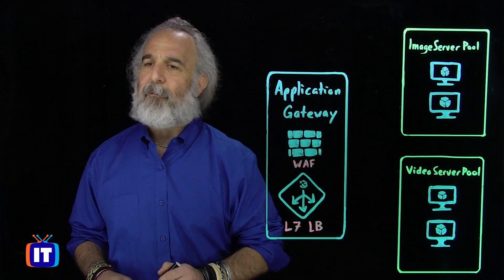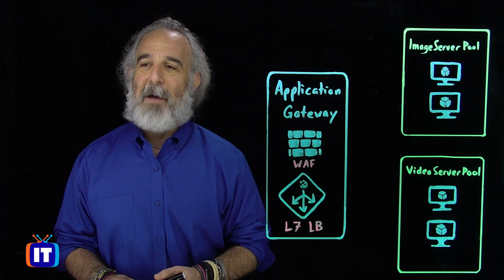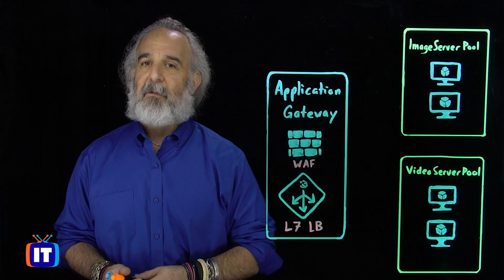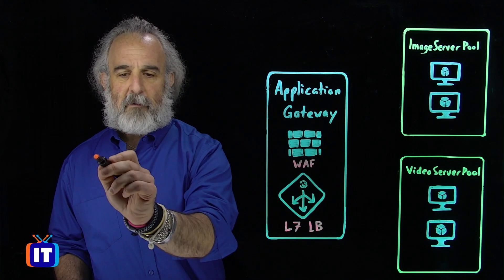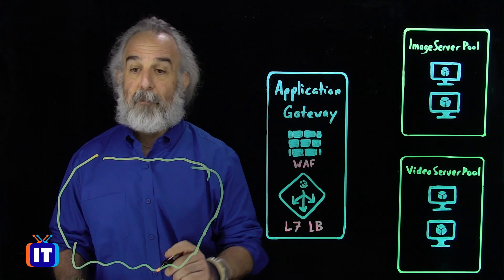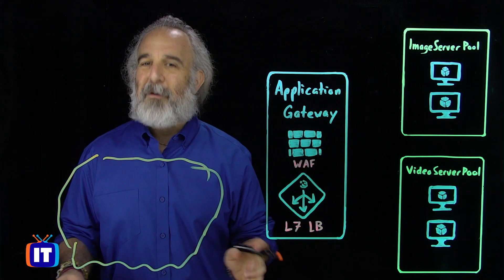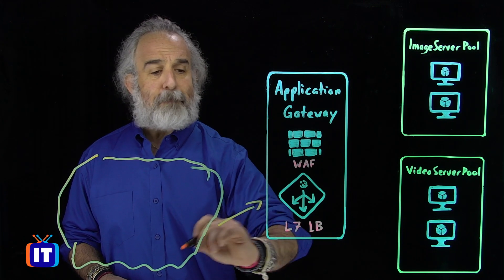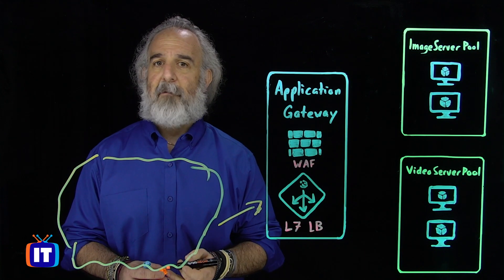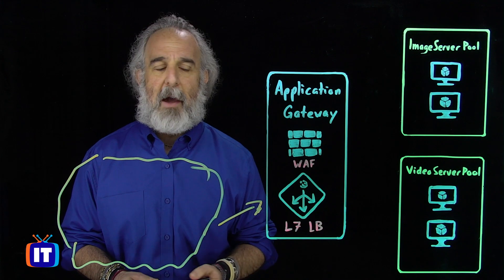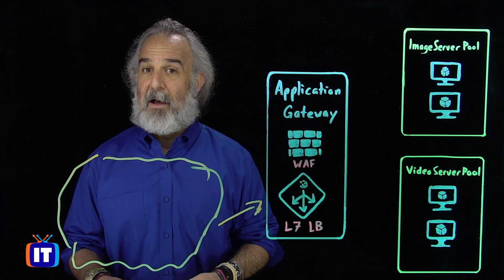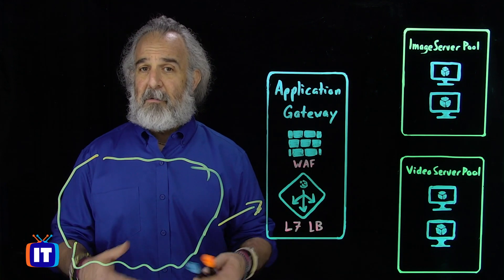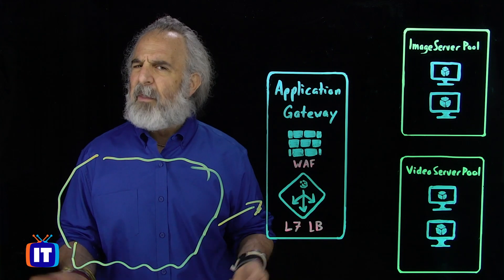Let's assume this area on the lightboard represents the internet — the world wide web, everything that goes on outside of our organization, away from all the data and services inside that people on the outside want to access. We want to come from this cloud, make a request, and have that request ultimately get access to one or more resources inside our network, inside the Azure Data Center. But we can't just show up, knock on the door, and expect access to all that content — there's security to worry about: who are you, what are your intentions, what do you want to do with our data?